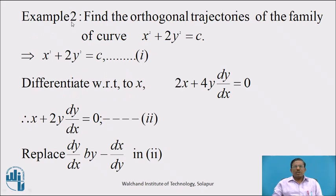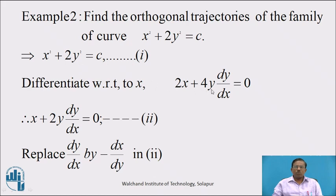Example 2: Find the orthogonal trajectory of the family of curves x² + 2y² = c, where c is the parameter. Solution: denote the given equation as equation 1. Differentiating both sides with respect to x: 2x + 2 · 2y · dy/dx = 0, i.e., 2x + 4y · dy/dx = 0. Dividing by 2: x + 2y · dy/dx = 0. Denote this as equation 2, the differential equation of the given curve.